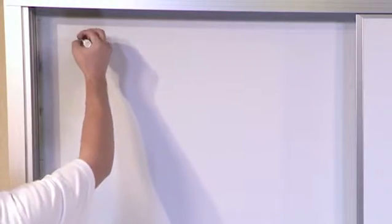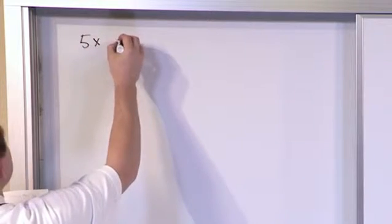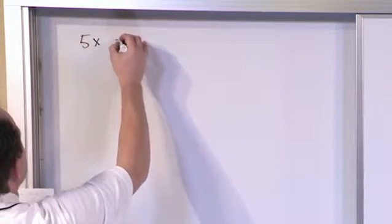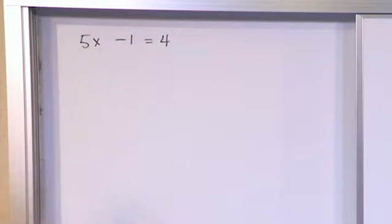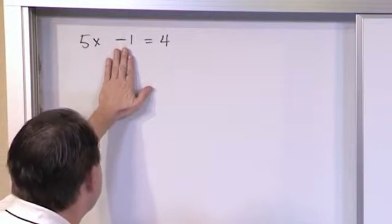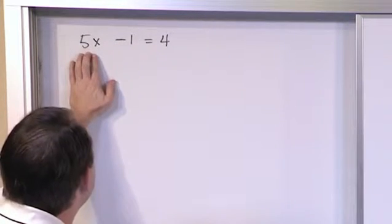What if we have 5x minus 1, make that a minus 1, is equal to 4. Now notice right away this is a little bit different than what we saw in the last section because we have a minus there, correct, but we also have multiplication going on.